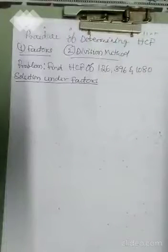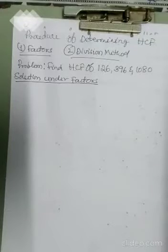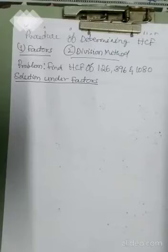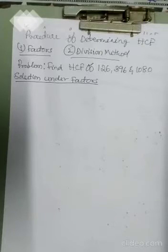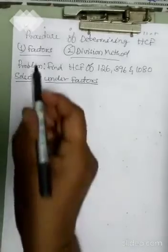Dear student, now we are going to do HCF using our court method. We know there are two methods: factor method and division method. Here there is a problem — three numbers are given: 126, 396, and 180. Find the HCF of these numbers. This is a two-mark question given under the examination. So whichever method is easy for you, you can follow. Let us start with the first method, that is the factor method.